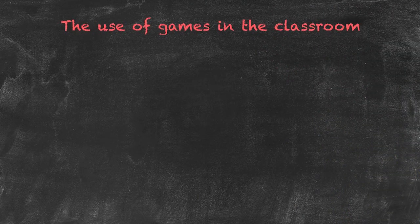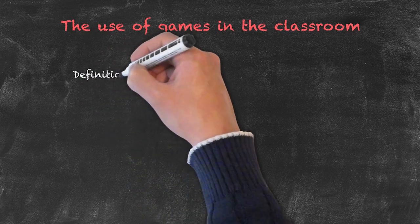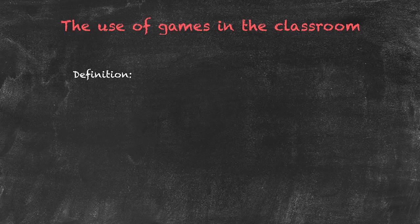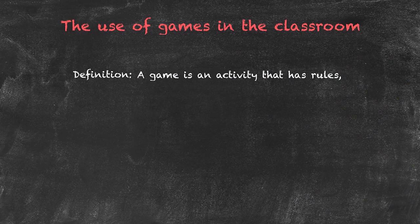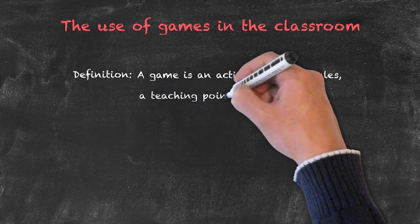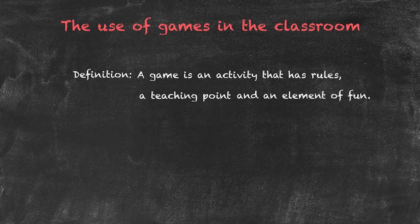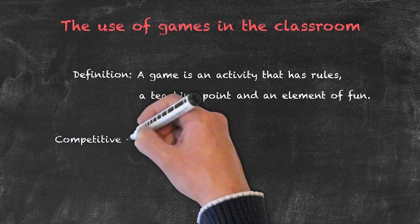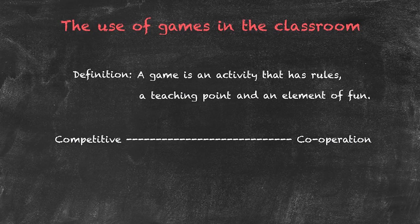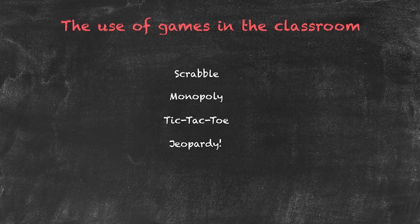Throughout the teaching of productive skills and receptive skills, our activate activities will usually involve some form of game. Our final consideration will be the use of games in the classroom. A game has three components: it is an activity that has rules, it should have a teaching point for its purpose in the classroom, and by nature of being a game it should also include an element of fun. There are many different types of games ranging from the competitive to those requiring cooperation, and all sorts involving both. We'll consider two well-known games from a long list that could include Scrabble, Monopoly, Tic-Tac-Toe, and Jeopardy, and see how they can be adapted for classroom use.